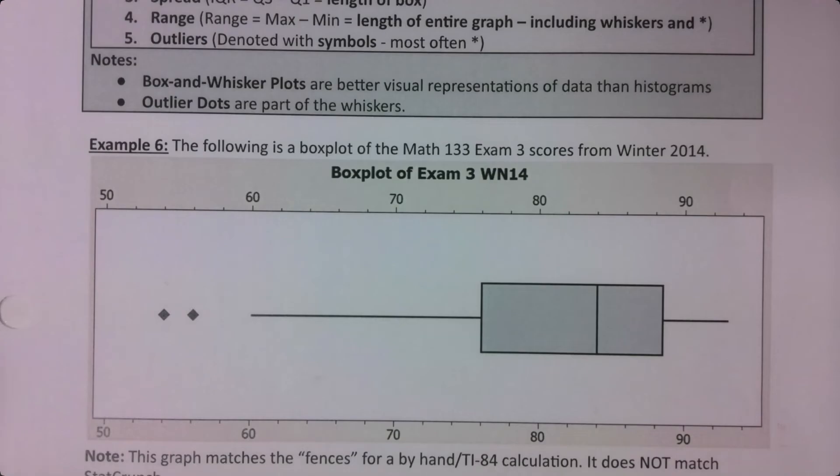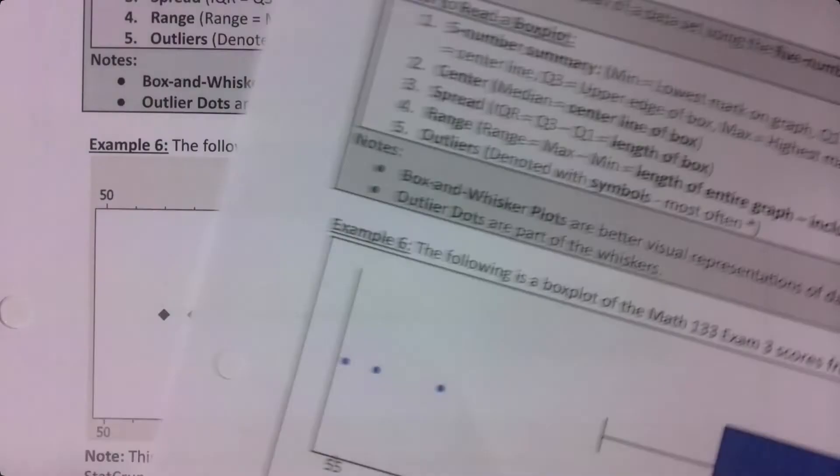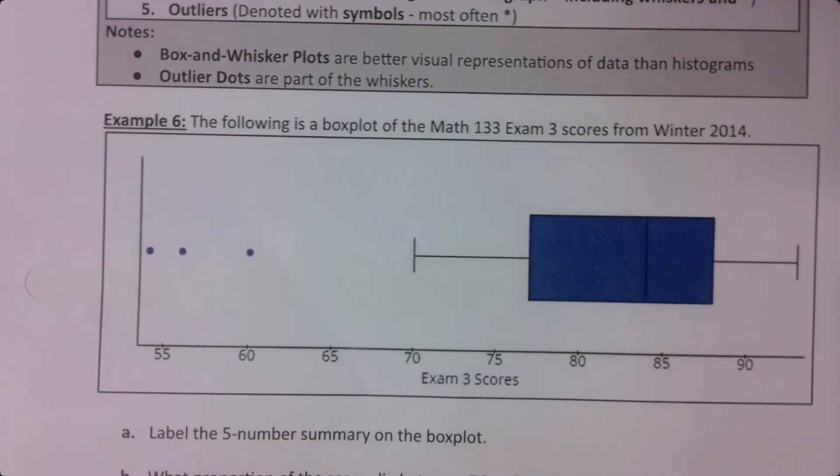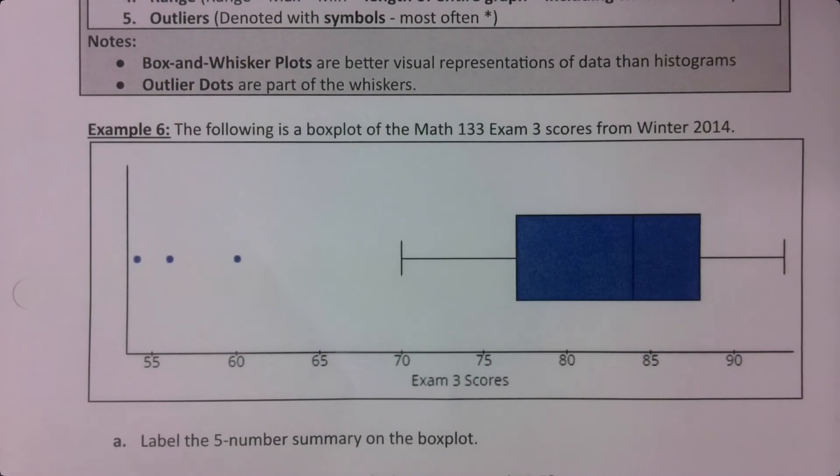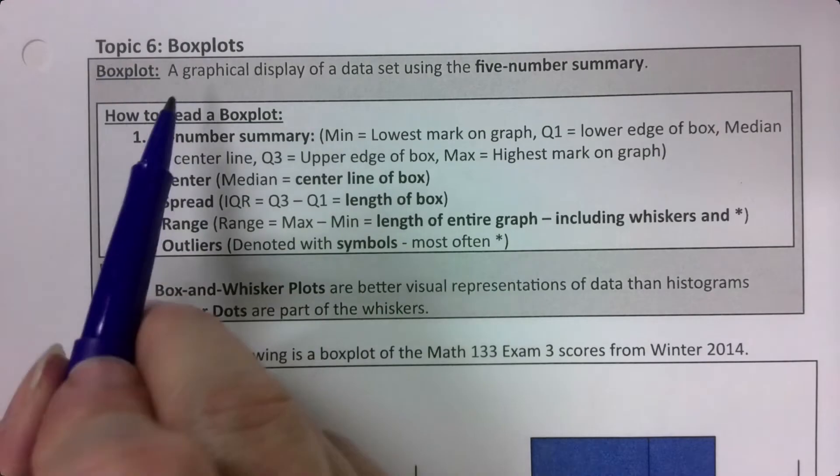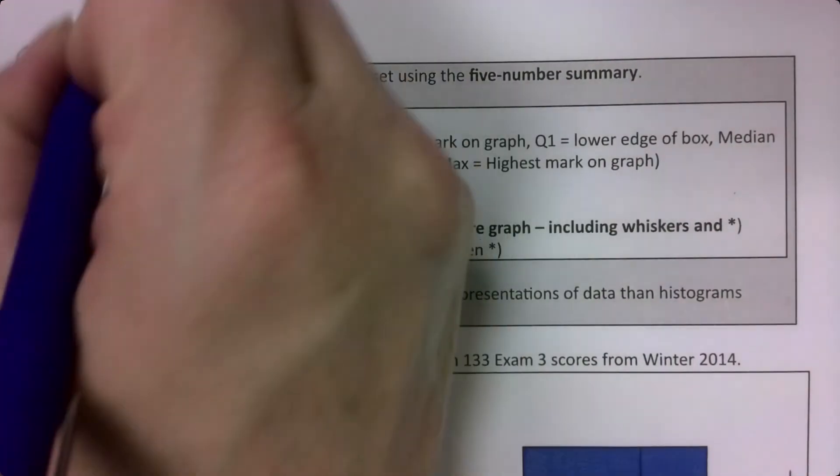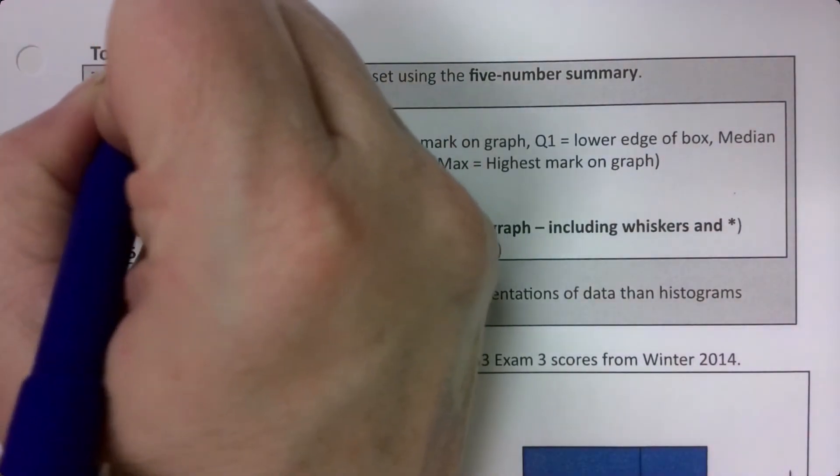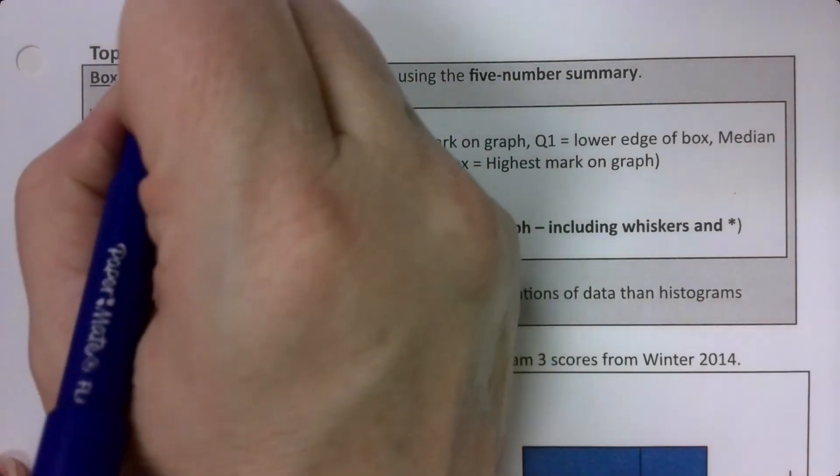This box plot is the box plot of the data we just looked at. However, I'm going to change this in next semesters to this box plot. So this is the one from StatCrunch. I'm going to show you how to find it.